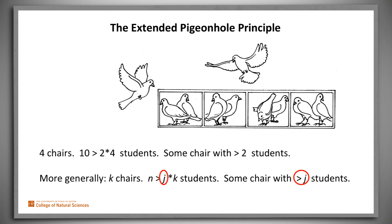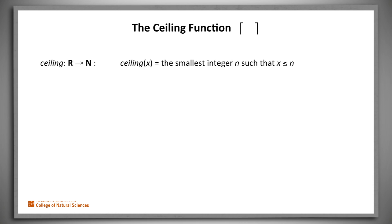Let's formalize this claim. To do that, we'll make use of a function we'll call ceiling. Ceiling is a function from the reals to the natural numbers. Ceiling of X is the smallest integer N such that X is less than or equal to N.